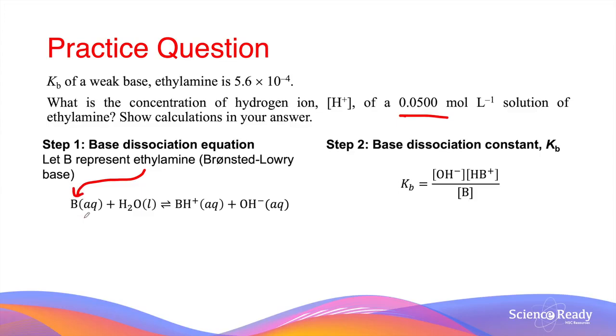Weak bases are Bronsted-Lowry bases, which are proton acceptors. So in the equation, the water molecule will donate a proton to the base to produce BH+. And in the process, as the water gives away the proton, it produces a hydroxide ion.